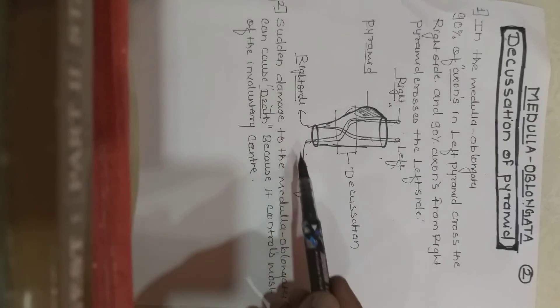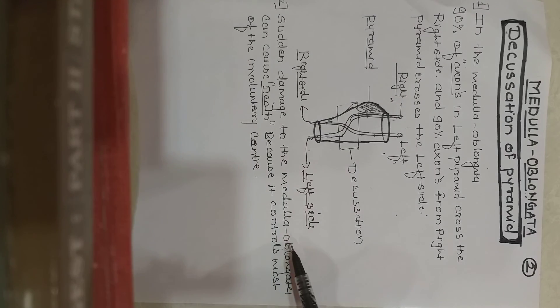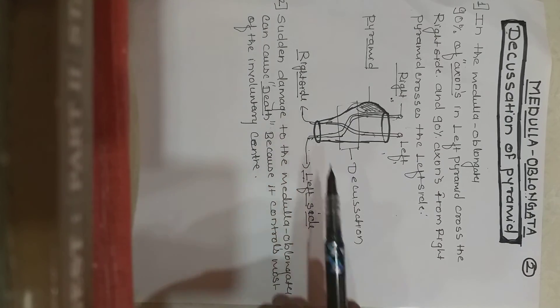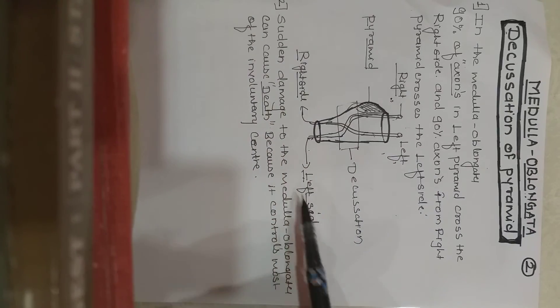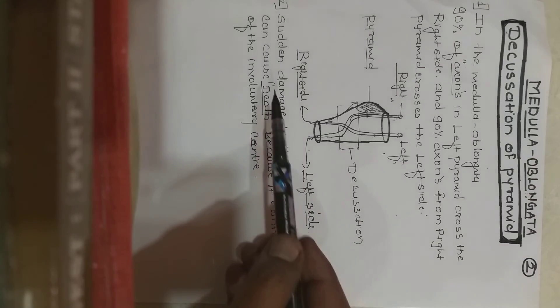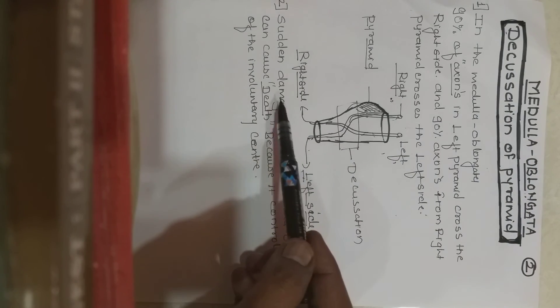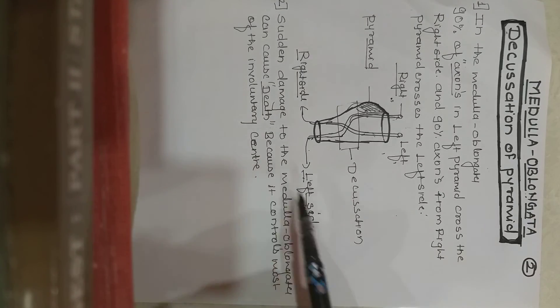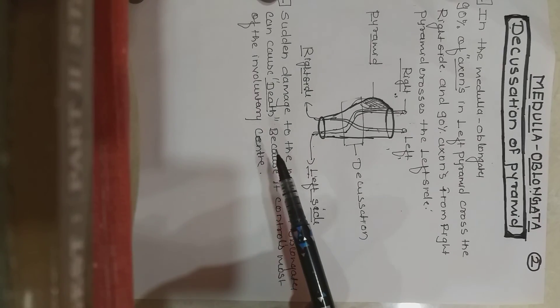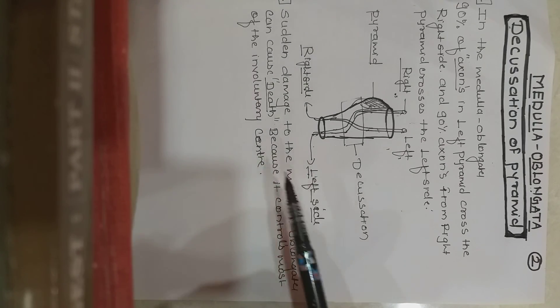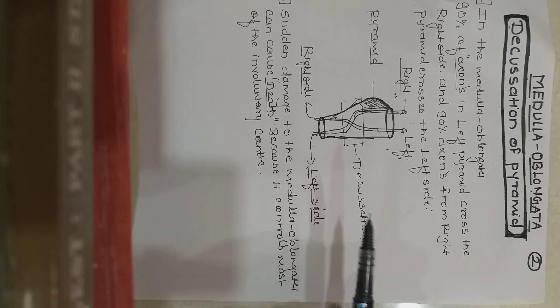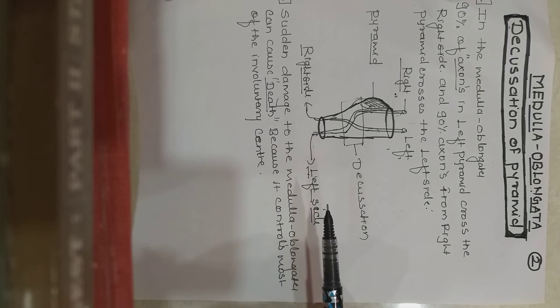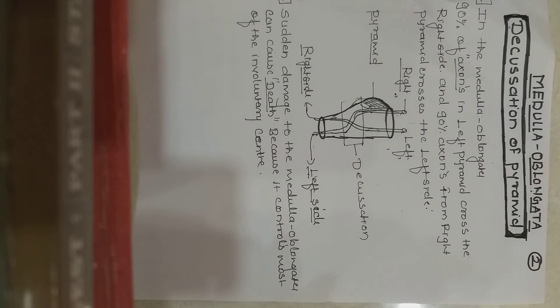Sudden damage to the medulla oblongata can cause death because it controls most involuntary centers, such as breathing and the cardiovascular center. Thank you for watching this lecture. Have a good day.